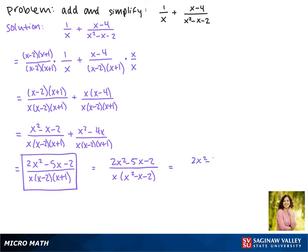So the other way we can write our answer is (2x² - 5x - 2)/(x³ - x² - 2x).